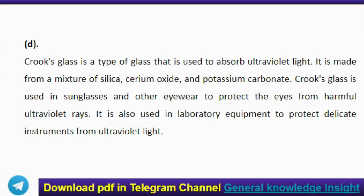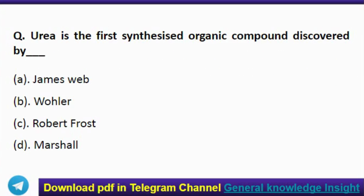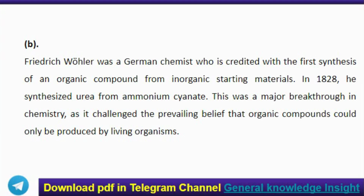The next question: urea was the first synthesized organic compound, discovered by whom? The correct answer is option B, Wöhler. Friedrich Wöhler was a German chemist credited with first synthesizing an organic compound from inorganic starting materials. In 1828, he synthesized urea from ammonium cyanate. This was a major breakthrough in chemistry as it challenged the prevailing belief that organic compounds could only be produced by living organisms.